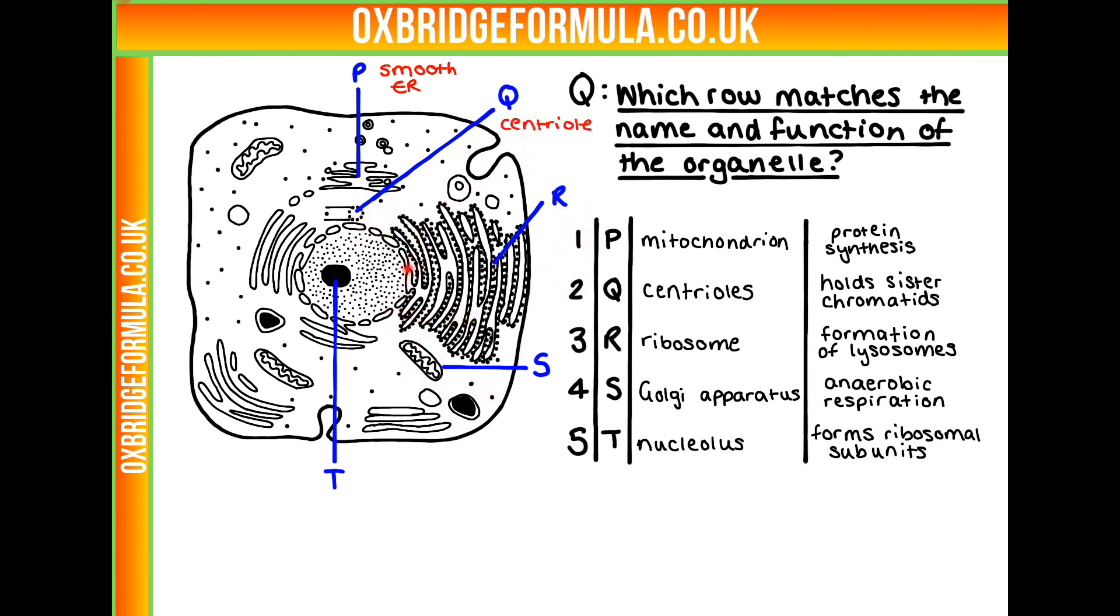Here we have R. Again, it's another banded structure. This time we do have the spots, we do have the ribosomes. So that's going to be the rough endoplasmic reticulum.